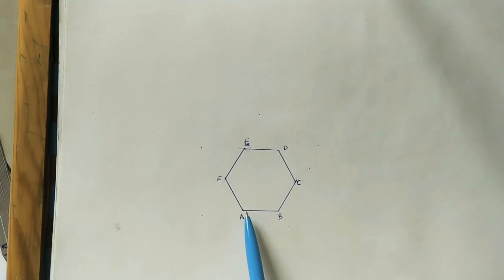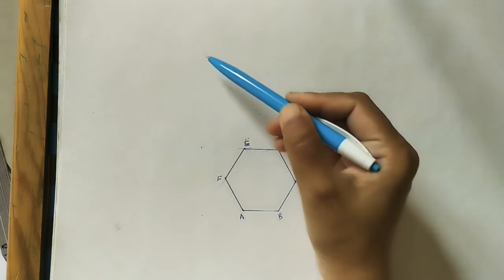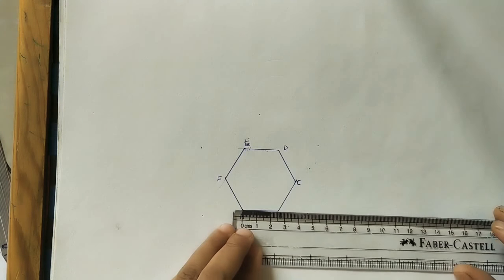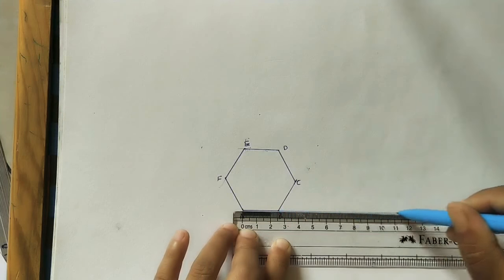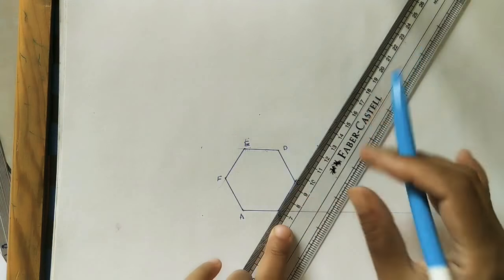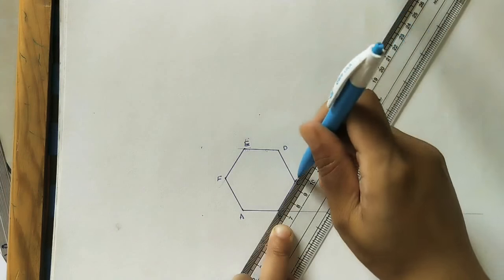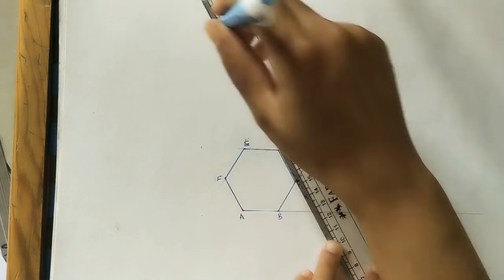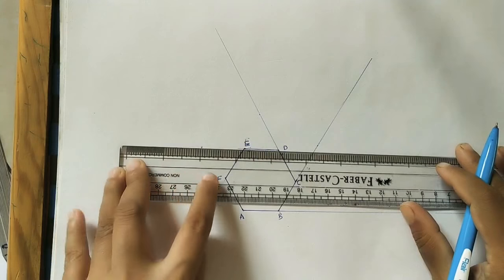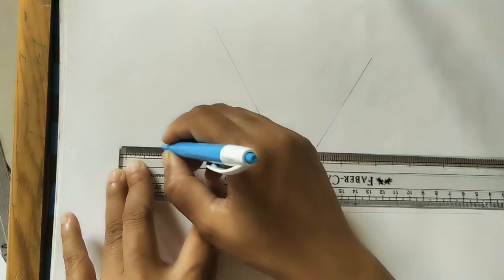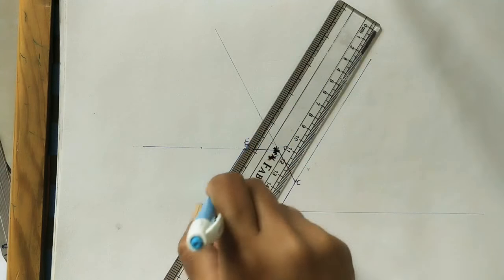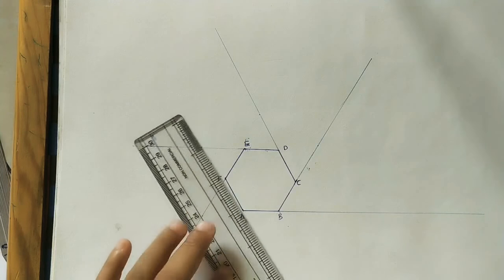After completing the hexagon, extend all six sides — AB, BC, CD, DE, EF, and AF — outward by some distance. We don't need an exact length at this stage; just extend each side sufficiently. Extend all sides including CD, EF, and AF in their respective directions.